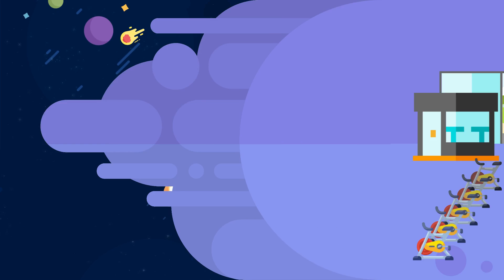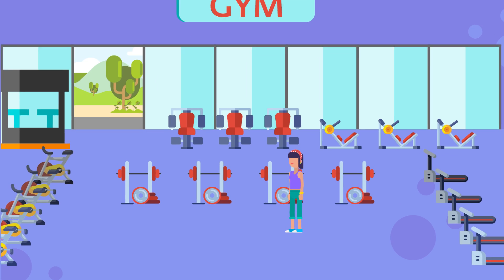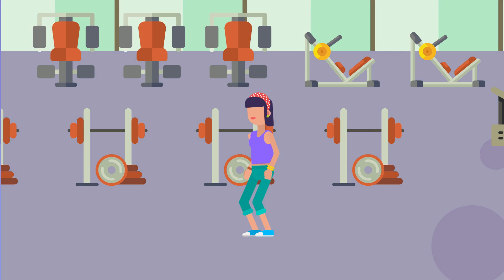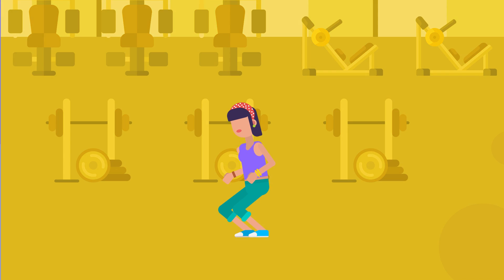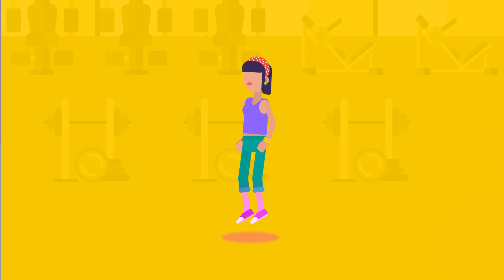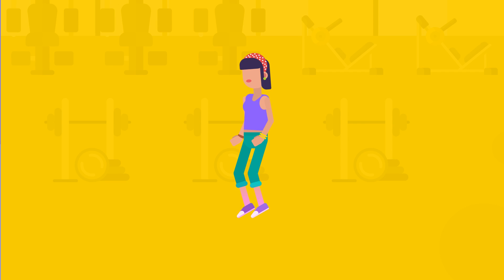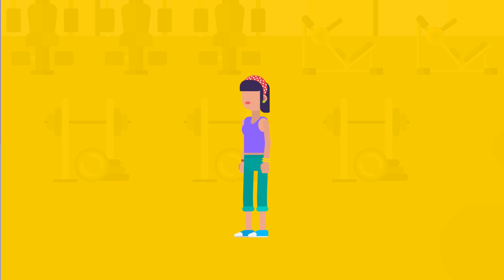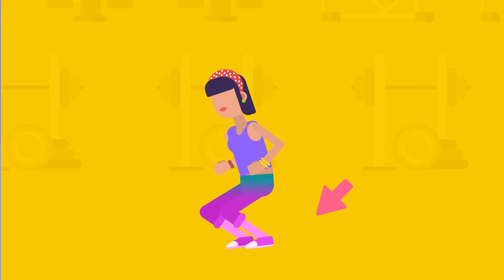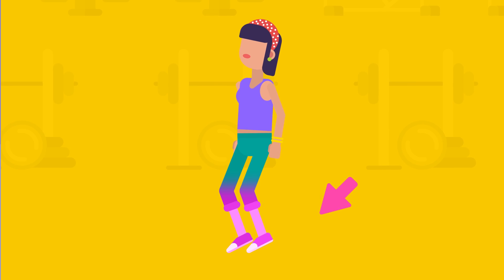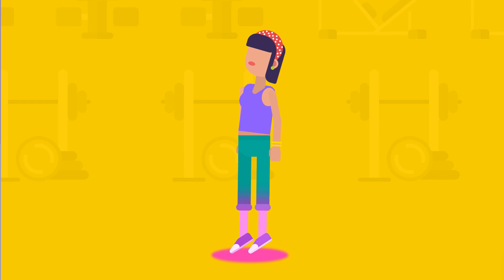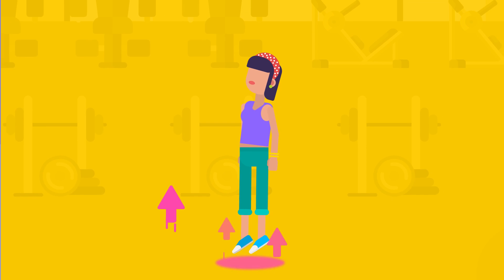Let's consider another example. When Joan jumps into the air, it's her feet sending the force or momentum down. The action is pushing the ground with her legs, and the ground's reaction is to return that force and push her upward.